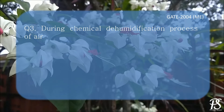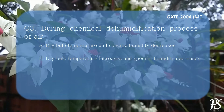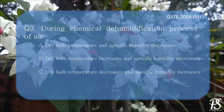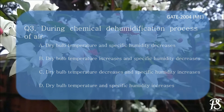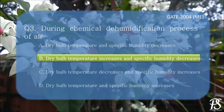During the chemical dehumidification process of air, since the process is a dehumidification process, the specific humidity cannot increase. So we can eliminate options C and D. Out of A and B, the correct answer is B — dry bulb temperature increases and specific humidity decreases.